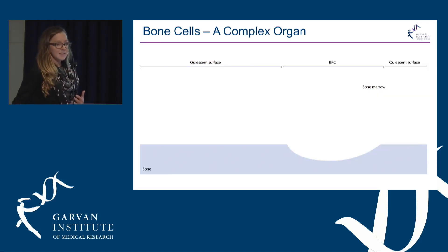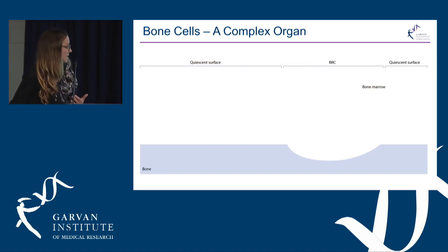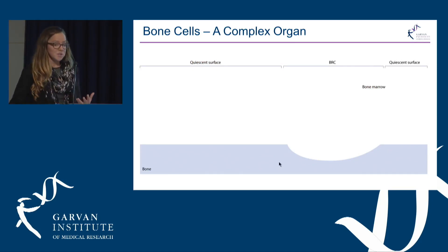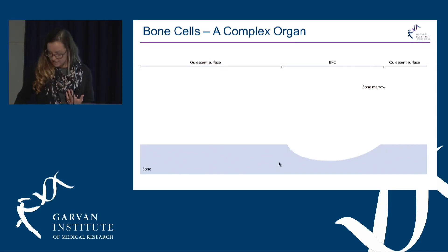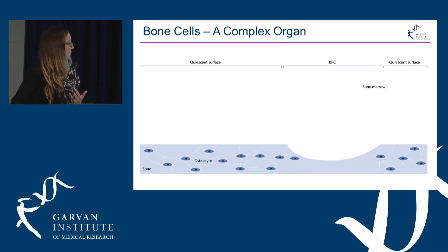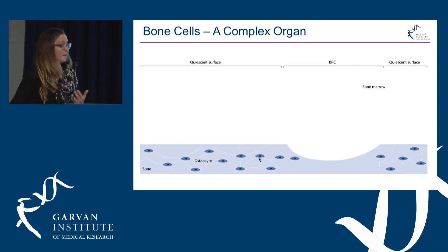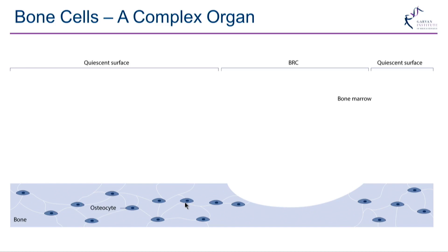This is a schematic to demonstrate that surface of the tissue I was just talking about. Along the bottom, shown in blue, is the bone tissue, and what I'm going to show you now is all of the cells that live inside this bone tissue. Firstly, we have osteocytes — cells that are embedded inside the bone matrix. They sit inside this matrix and control how bone responds to load, which is something that Mike will speak to more shortly.